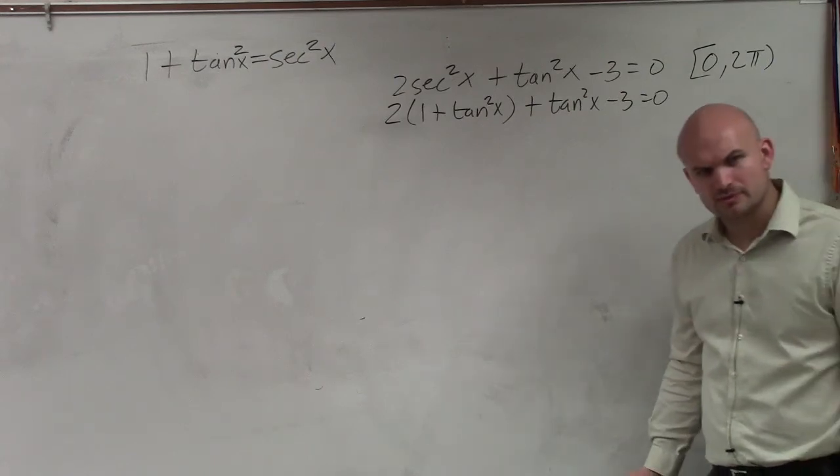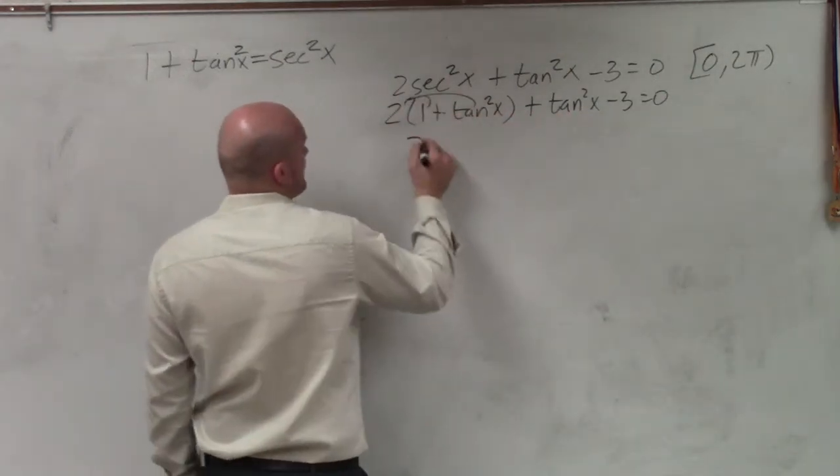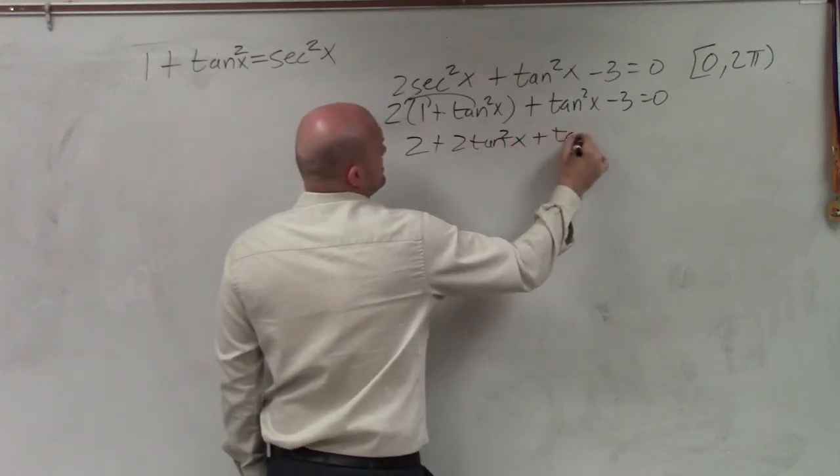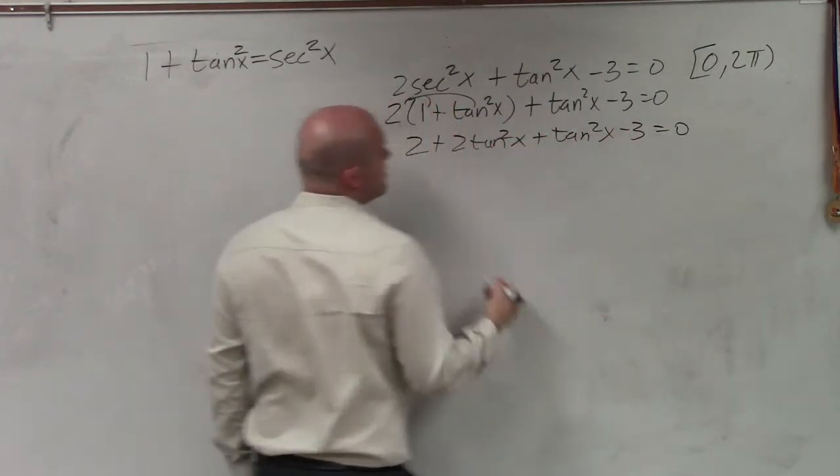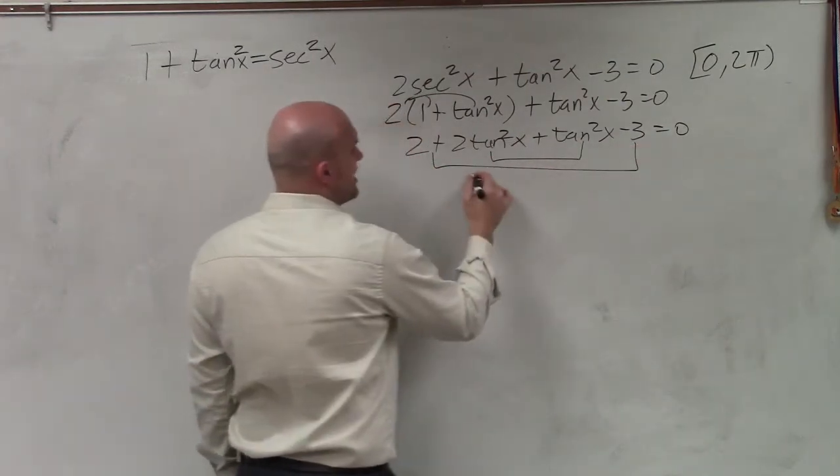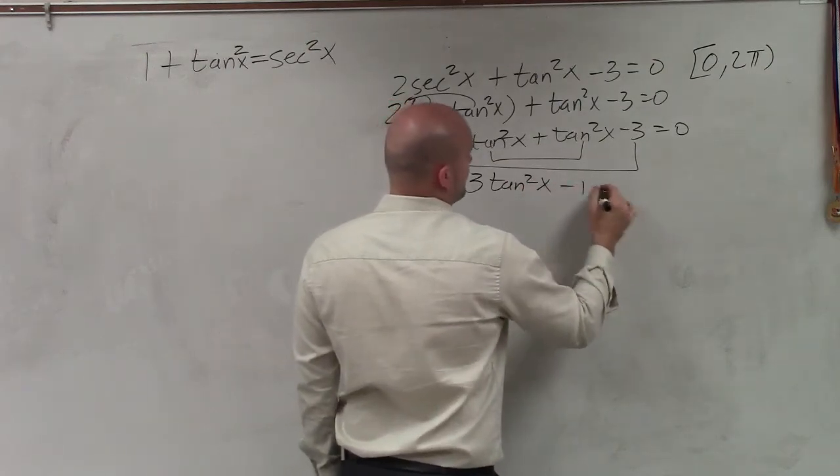So then I can apply the distributive property: 2 + 2tan²x + tan²x - 3 = 0. These are like terms. So we combine them to 3tan²x - 1 = 0.